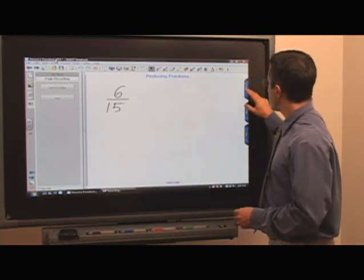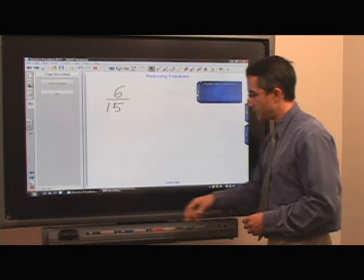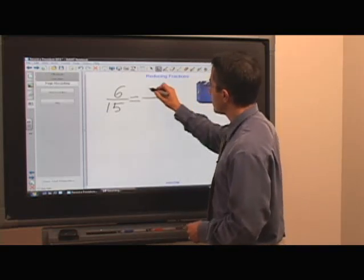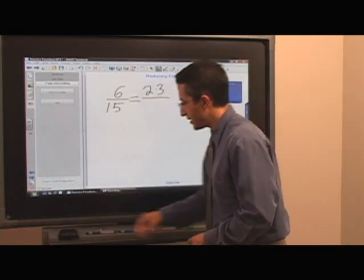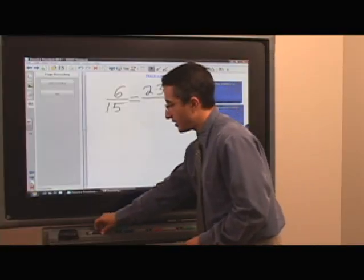So with reducing fractions, the first step is step one, which is to factor the numerator. So I'll pick up my pen, and write equals, and this is 2 times 3, because those are the different factors. Put down the pen, and move to step 2, and bring that out, and factor the denominator.